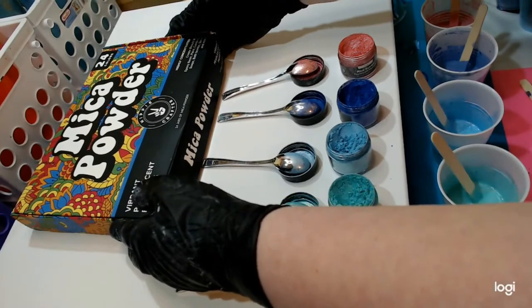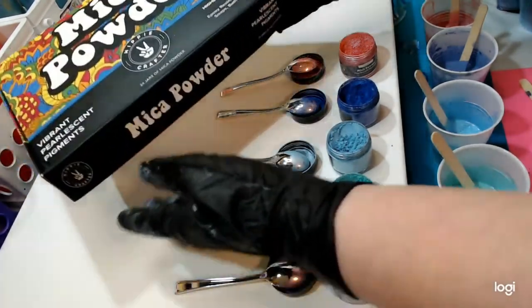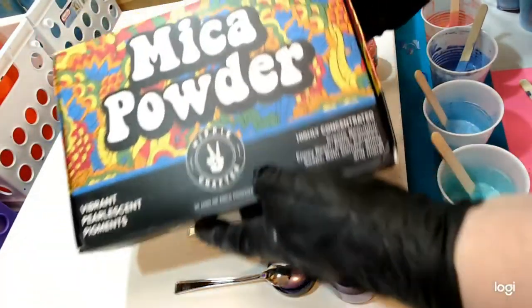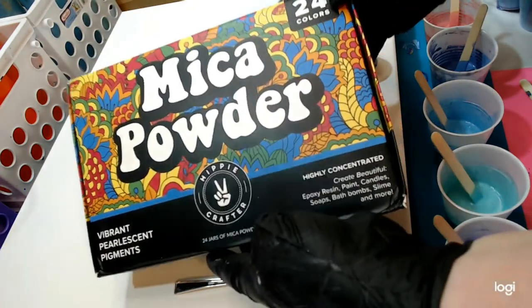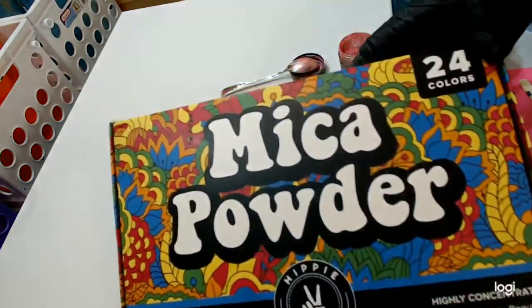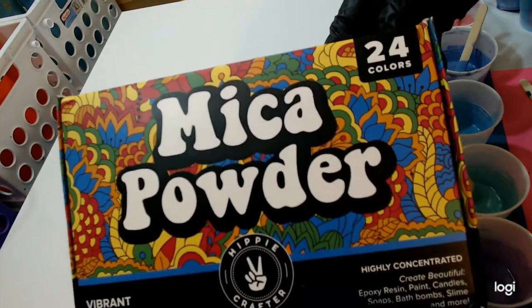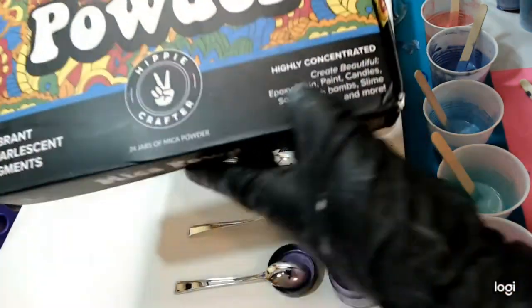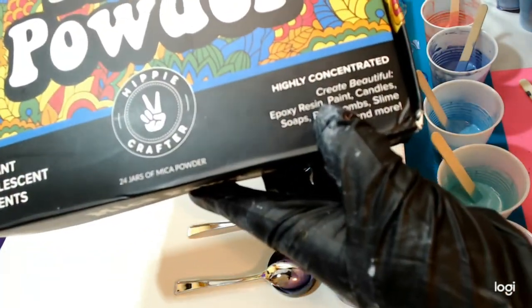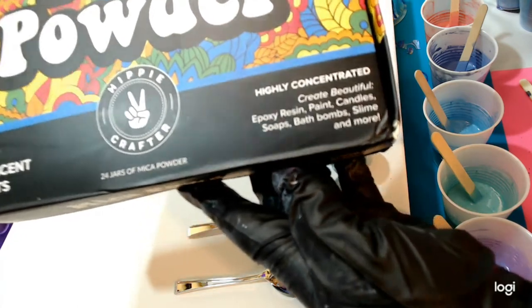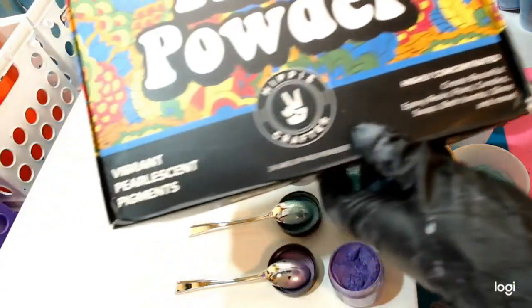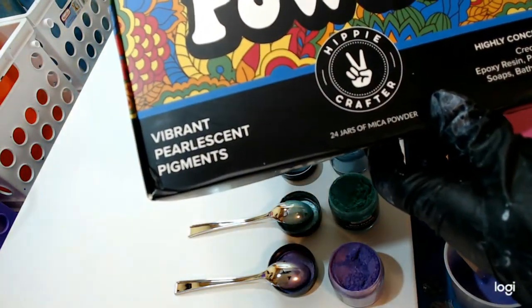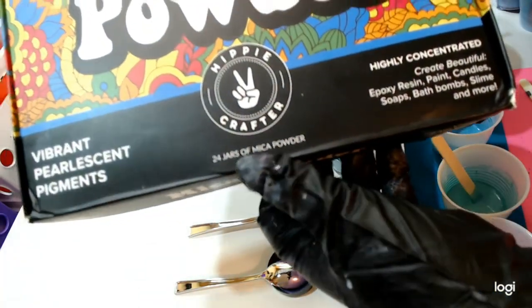Today we're going to try to use five different colors and do a blown paint pour with the mini blower. Here's the set of mica powders they sent me. You can use mica powders for all kinds of things - soaps, bath bombs, slime - it gives you a few ideas there.